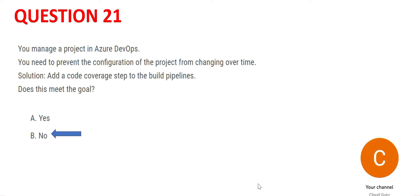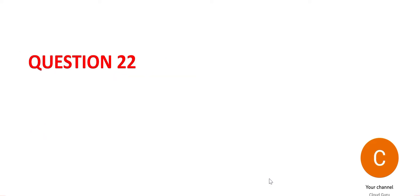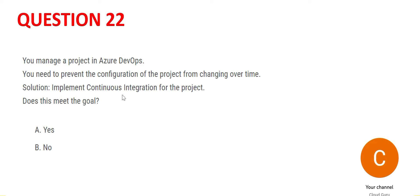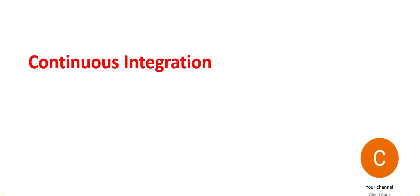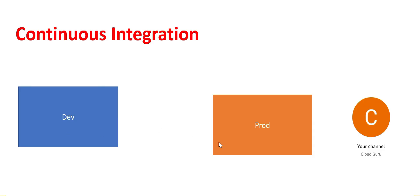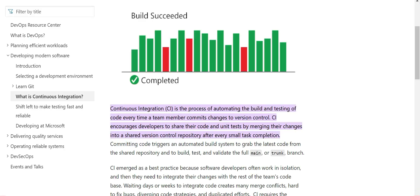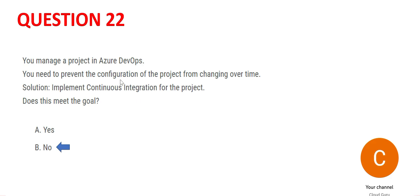Let's look at question 22. The question is the same but the solution is continuous integration. Continuous integration means that whenever you make a small code change and want to commit it, you can move that piece of code to production continuously. Whenever a code change is done, you commit it and share it in a version control repository, after which deployment proceeds. But this will not help with preventing project configuration changes over time.